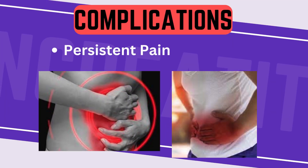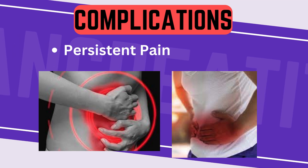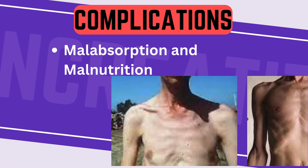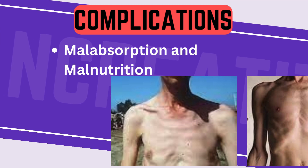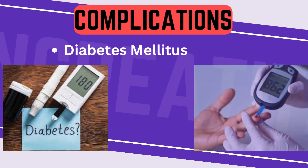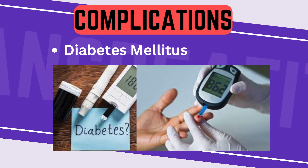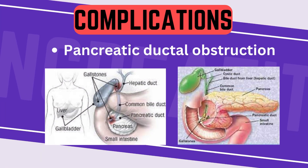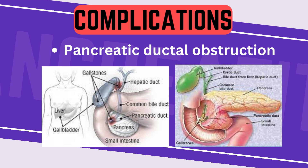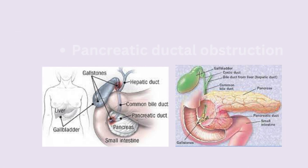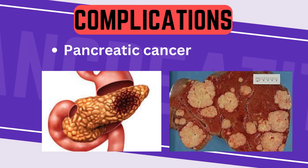6. Persistent pain — chronic pancreatitis is often associated with ongoing abdominal pain, which can be severe and challenging to manage. 7. Malabsorption and malnutrition — insufficient production of digestive enzymes can lead to difficulty absorbing nutrients, resulting in malabsorption and malnutrition. 8. Diabetes mellitus — especially in cases of chronic pancreatitis, loss of insulin-producing cells results in diabetes mellitus. 9. Pancreatic ductal obstruction — scarring and inflammation can cause narrowing or obstruction of the pancreatic ducts, leading to further severity of symptoms and complications. 10. Pancreatic cancer risk — chronic inflammation of the pancreas increases the risk of developing pancreatic cancer over time.